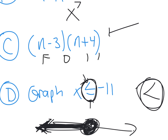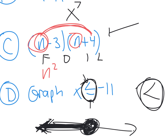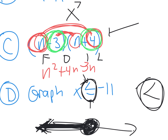FOIL is a great way to do it. You don't have to do it this way, but it's the best way. First: N squared. Outside is these two — why are they called the outside? Because they're on the outside of this whole big thing, on the way left and the way right. Plus 4N, minus 3N. And then the last are the last one in each parenthesis. Negative 3 and positive 4 makes negative 12. That's something you have to be able to do to get a C.